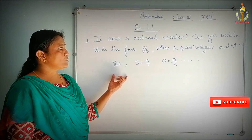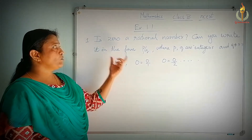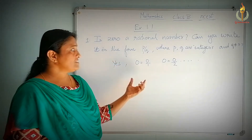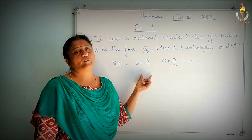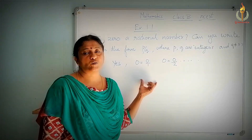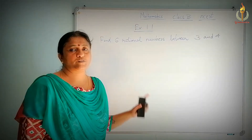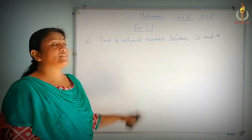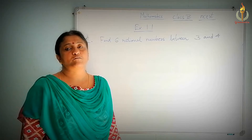The answer for the first question is yes — 0 is a rational number — and the reason is because it can be written in the form P by Q, where P and Q are integers and Q not equal to 0. Now, your second problem is: find 6 rational numbers between 3 and 4.